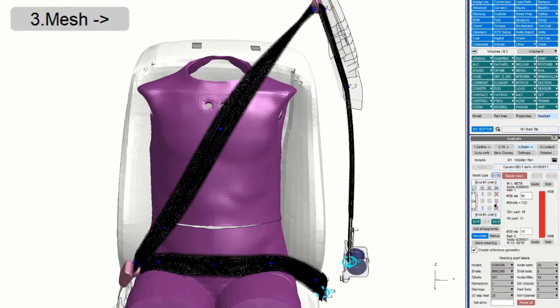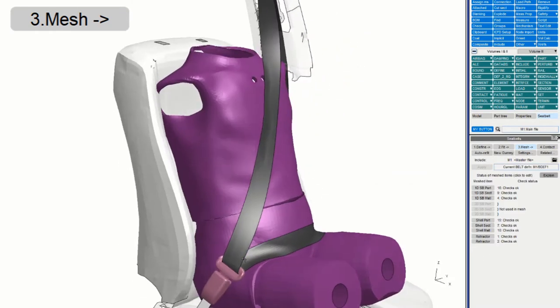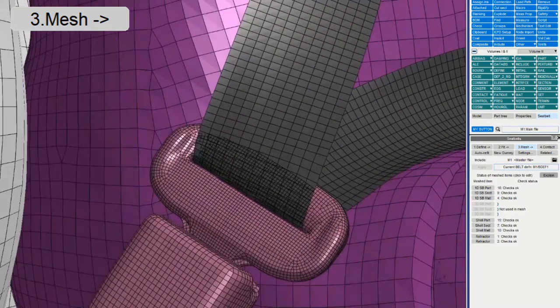Next, we mesh using 1D belts at the ends and fabric shells for most of the path. The new option to create reference geometry is on, and Primer generates a shell mesh along the path we defined.